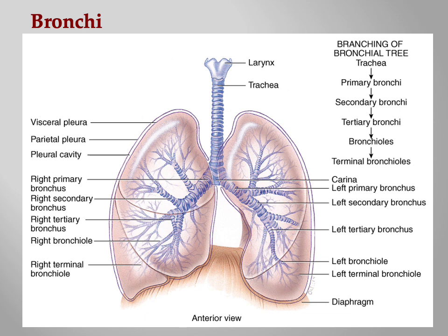Primary bronchi branch into secondary bronchi, secondary into tertiary bronchi, and then many more divisions simply called bronchioles. We stop numbering after three. Eventually we reach terminal bronchioles, then respiratory bronchioles, then alveolar ducts, and finally the alveolar sacs and individual alveoli.